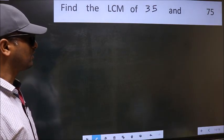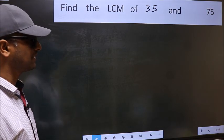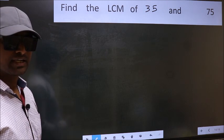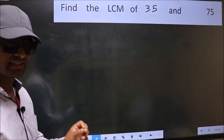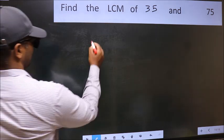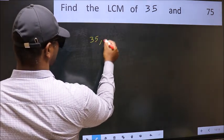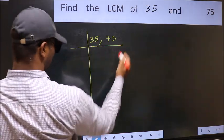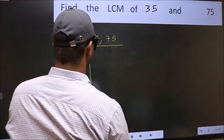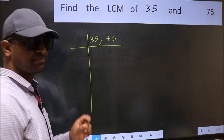Find the LCM of 35 and 75. To find the LCM, we should frame it in this way: 35, 75. This is your step 1.